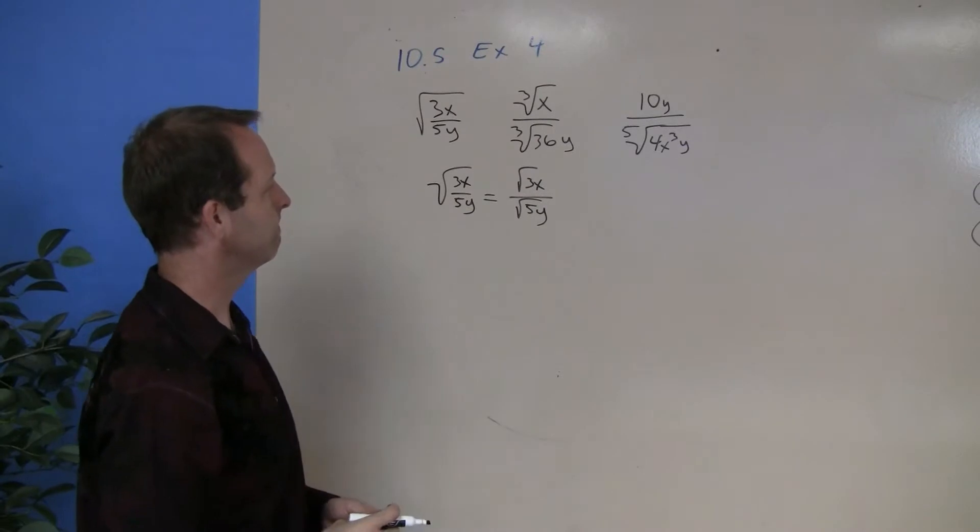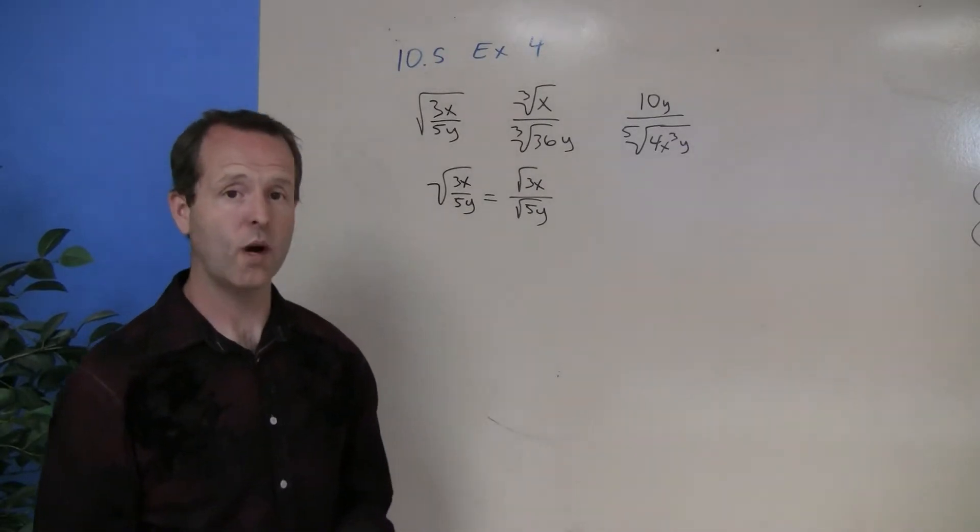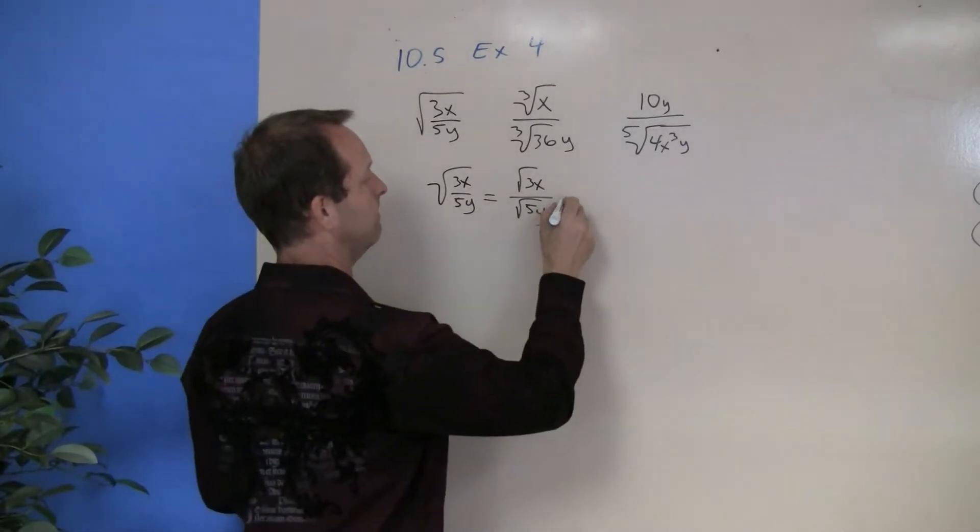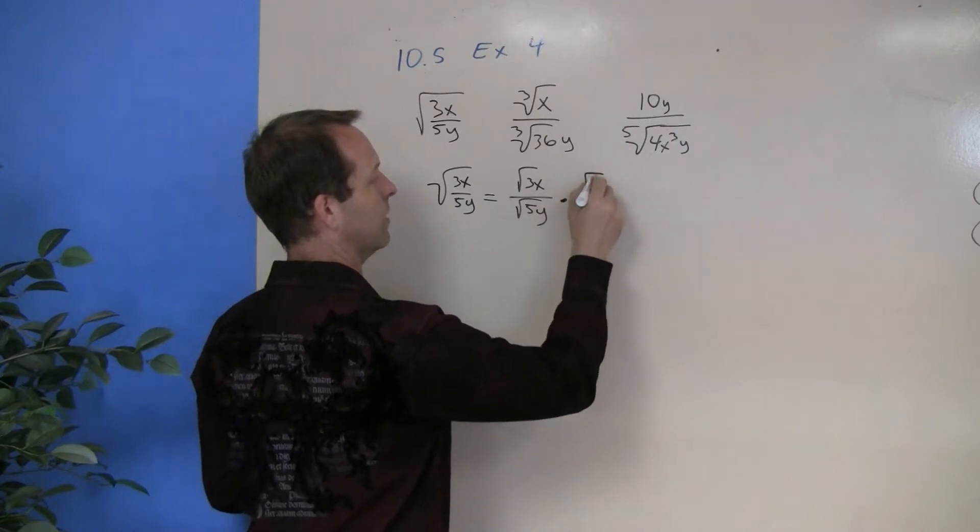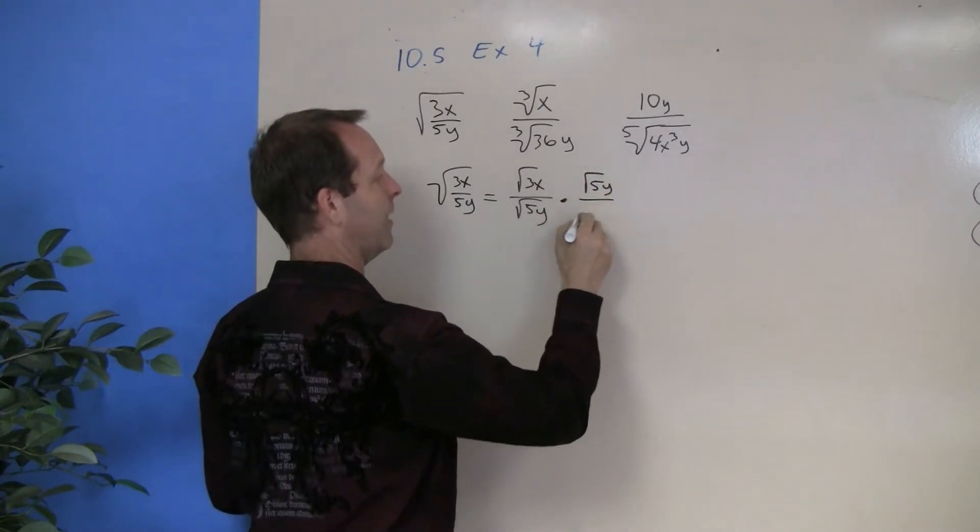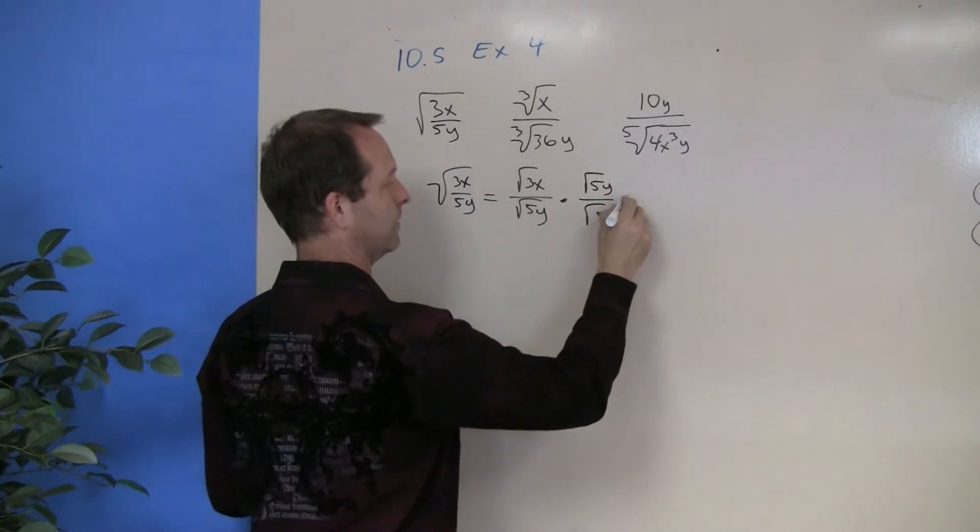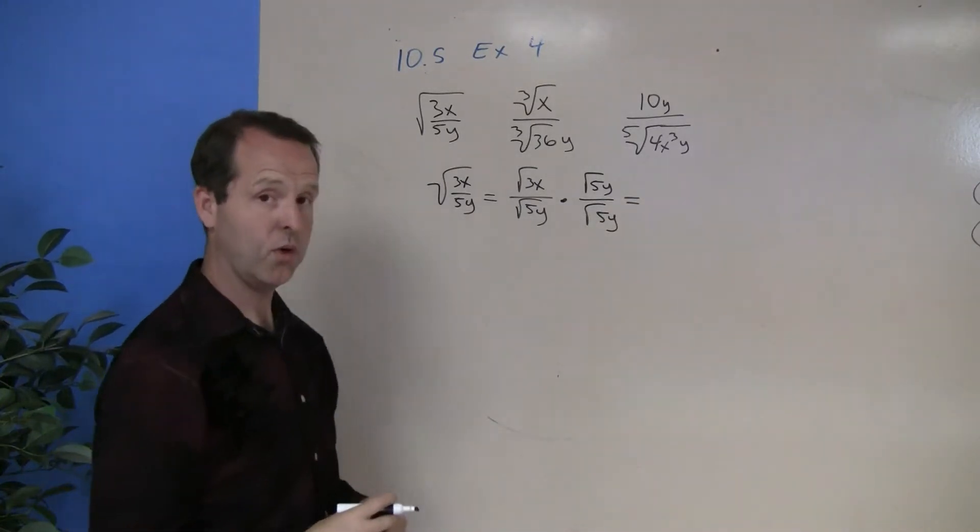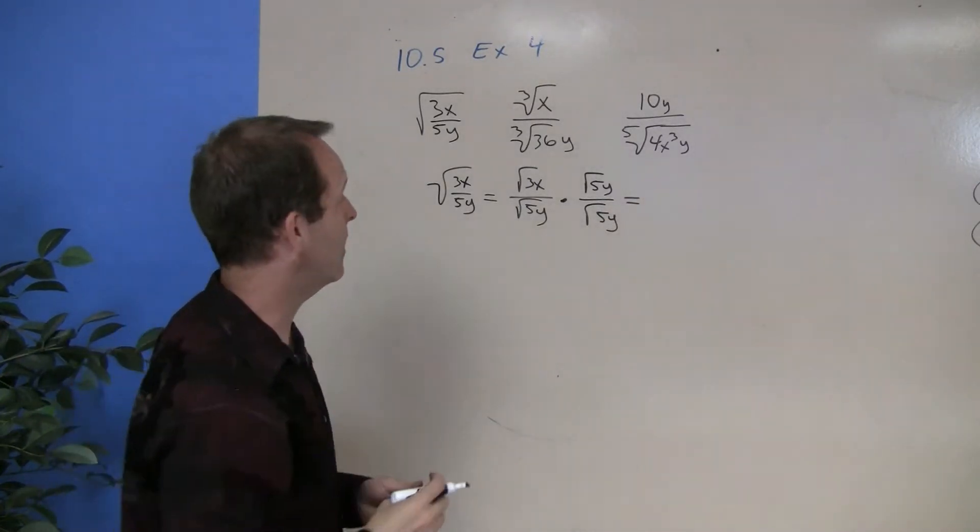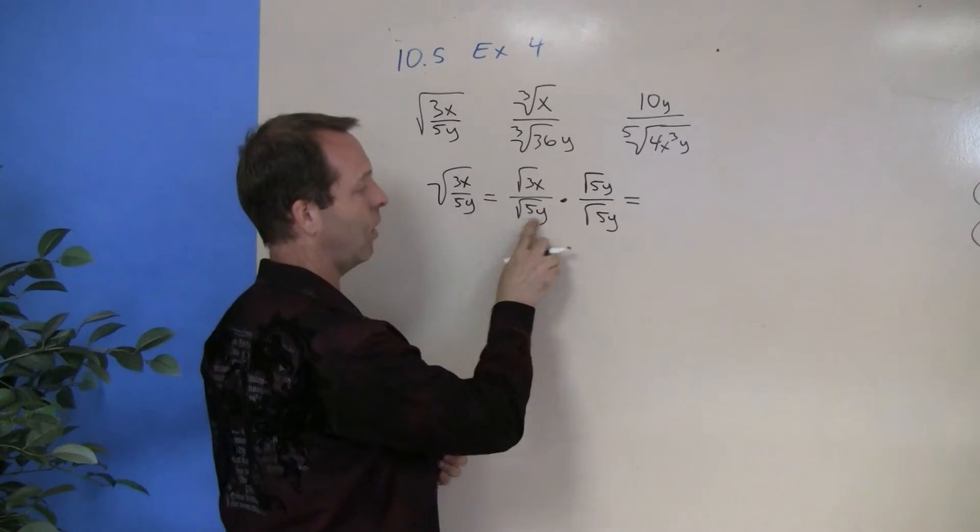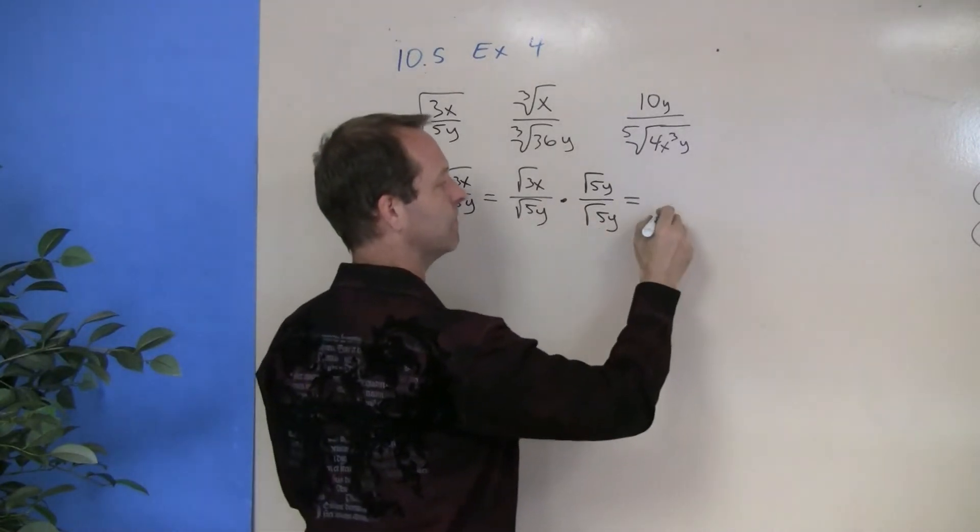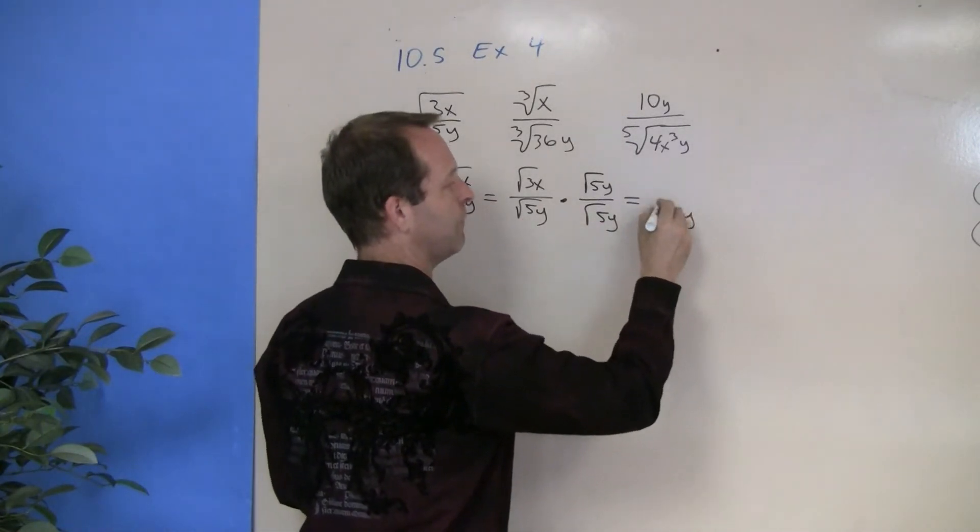Here's my quotient rule. I need to come up with a clever version of one, and the one I'm going to choose is the square root of 5y over the square root of 5y. In square root world, this one works fairly often—the square root of 5y times the square root of 5y goes away. It just becomes 5y.